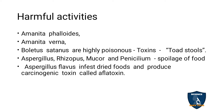Harmful activities of fungi: Amanita phalloides, Amanita verna, and Boletus satanus are highly poisonous fungi that create toxins. Aspergillus, Rhizopus, Mucor, and Penicillium cause food spoilage. Aspergillus flavus infests dry foods and produces carcinogenic toxins — it causes cancer due to the presence of aflatoxin. The carcinogen in Aspergillus flavus is aflatoxin.